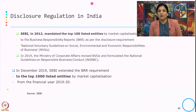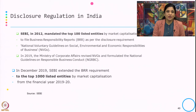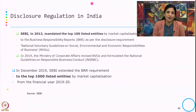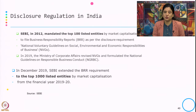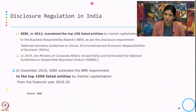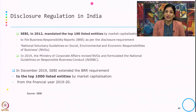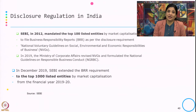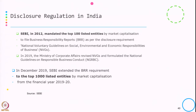Now let us look at disclosure regulation in India. In 2012, SEBI mandated the top 100 listed entities by market capitalization to file the Business Responsibility Report (BRR) as per disclosure requirements, based on the National Voluntary Guidelines on social, environmental and economic responsibility of business, known as NVGs. In 2019, MCA revised the NVGs and formulated the National Guidelines on Responsible Business Conduct (NGRBC). In December 2019, SEBI extended the BRR requirement from the top 100 to the top 1000 listed entities by market capitalization for financial year 2019-20.